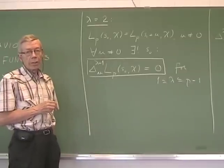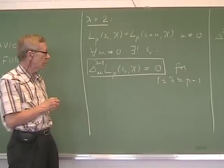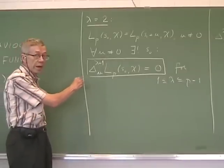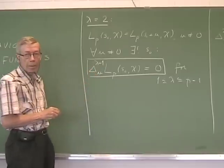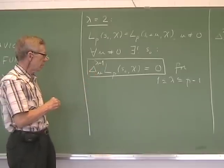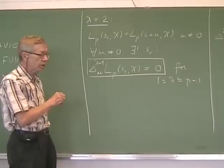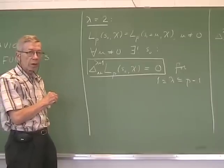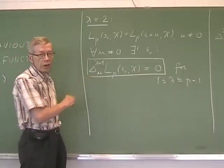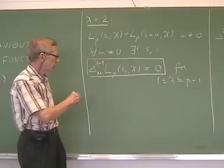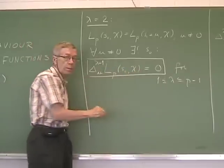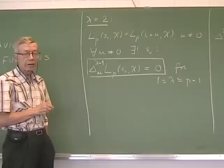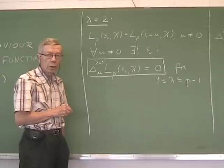To get an impression what it means, we may take u equal to p minus 1. Then we get a sequence involving Bernoulli numbers, or generalized Bernoulli numbers in the general case, tending to zero theoretically. And this leads to the following congruencies.